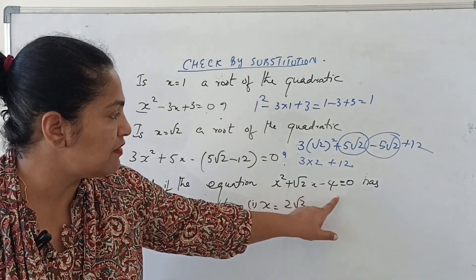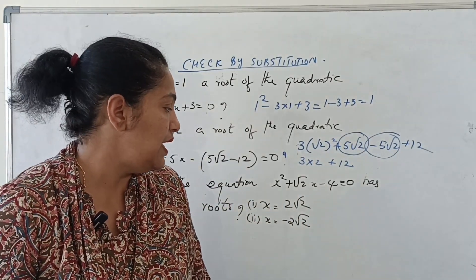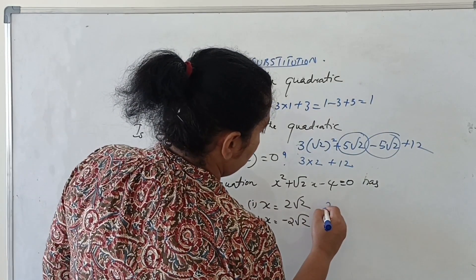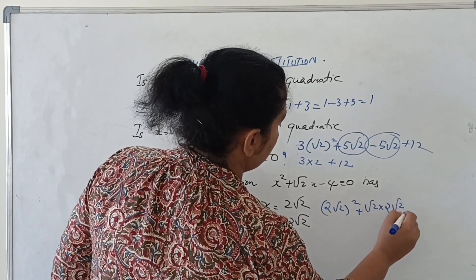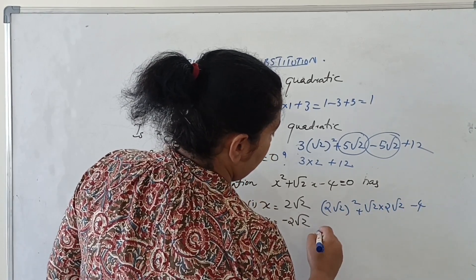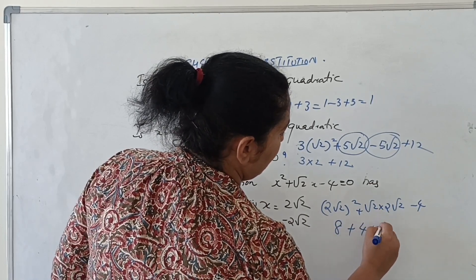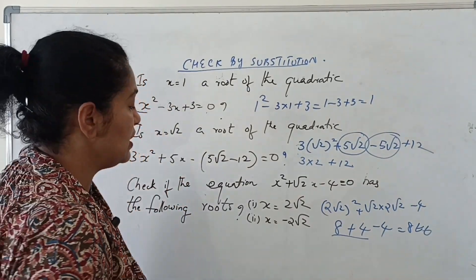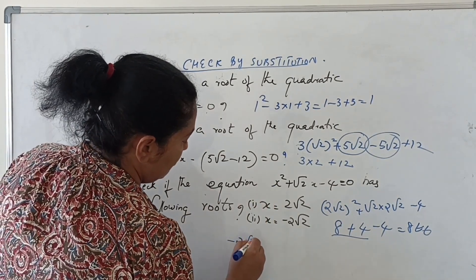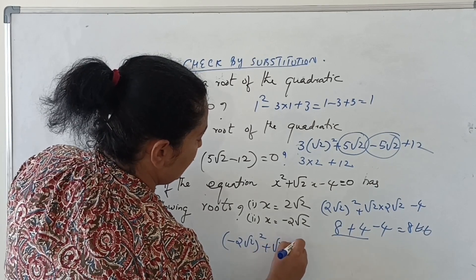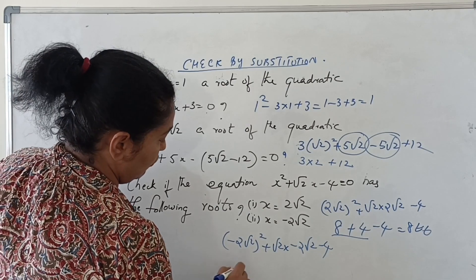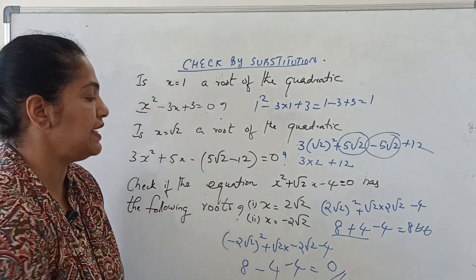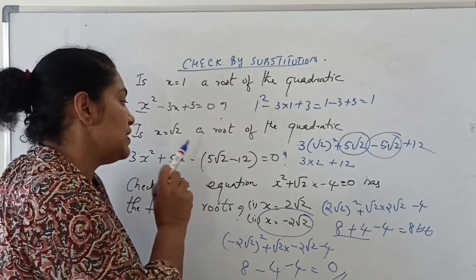Check whether x² + √2·x − 4 = 0 has the roots x = 2√2 and x = −2√2. For x = 2√2: (2√2)² + √2·(2√2) − 4 = 8 + 4 − 4 = 8, which is not equal to 0, so 2√2 is not a root. For x = −2√2: (−2√2)² + √2·(−2√2) − 4 = 8 − 4 − 4 = 0, so x = −2√2 is a solution of this equation.